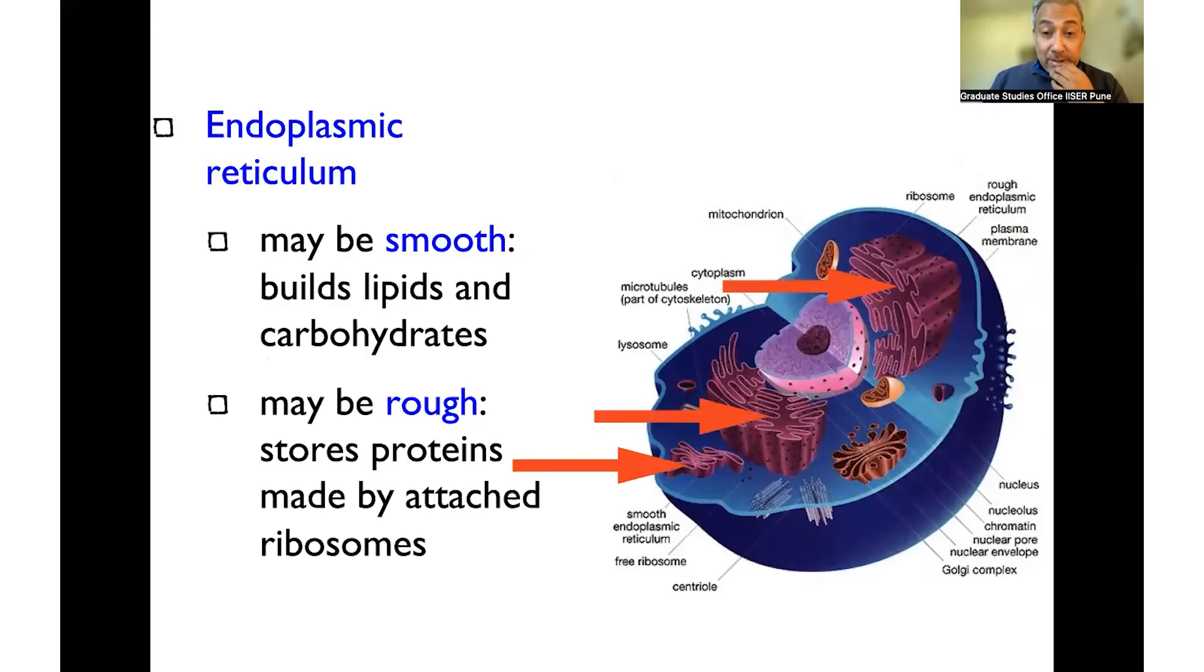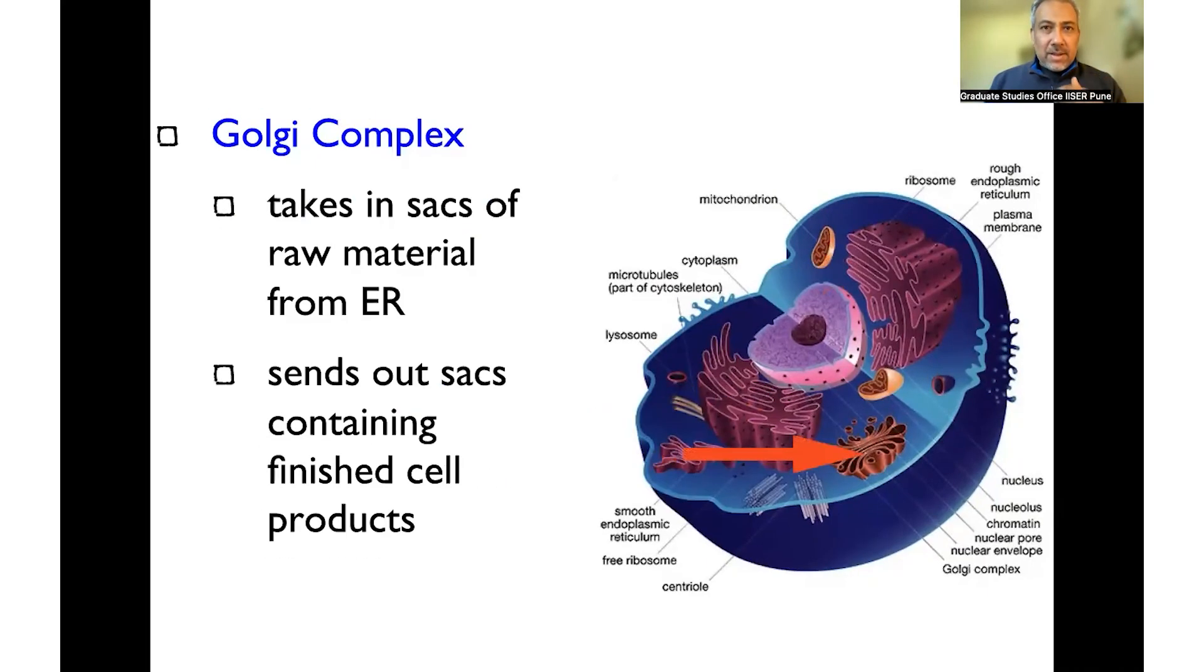We have endoplasmic reticulum. And the endoplasmic reticulum is a network of membranes that talks to the nucleus, has two versions, smooth and rough, and we will come to both of them. And the presence of the ribosomes on the rough endoplasmic reticulum is what allows for protein synthesis to take place.